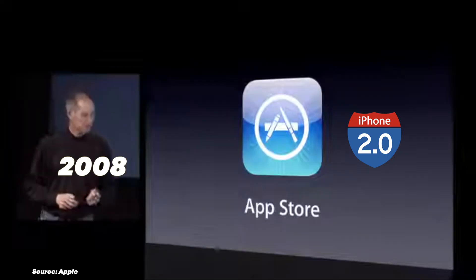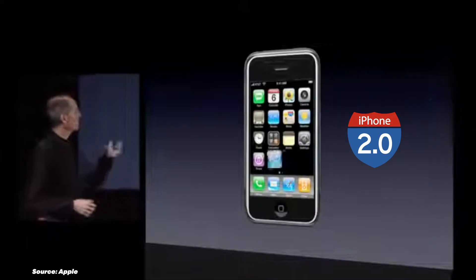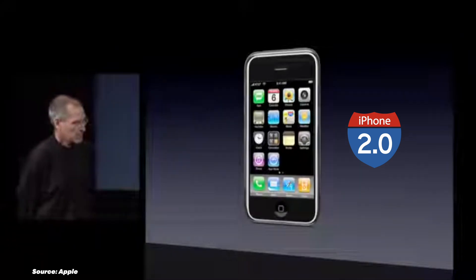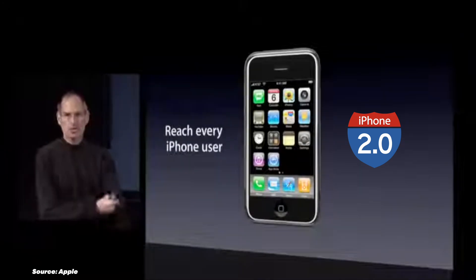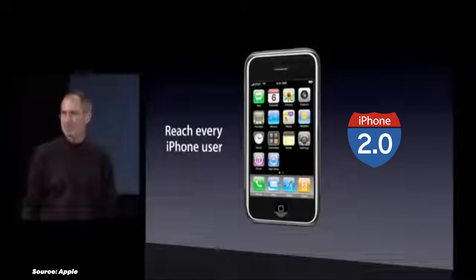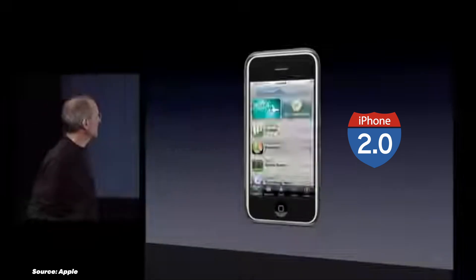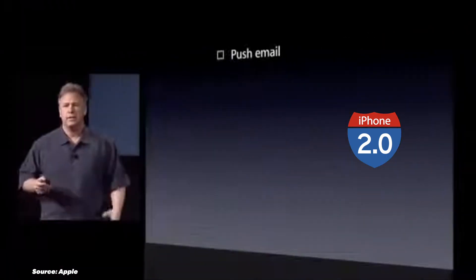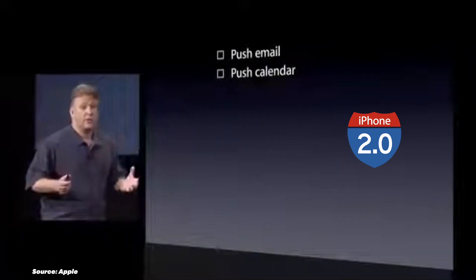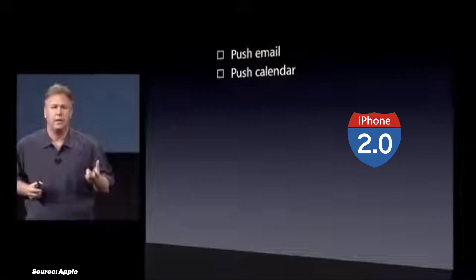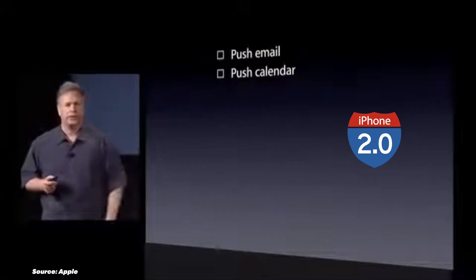In 2008, iPhone OS 2 introduced the App Store, a groundbreaking marketplace that unlocked the potential for third-party applications. This huge update revolutionized the iPhone, transforming it into a versatile and entertaining device. The App Store opened an infinite array of possibilities at your fingertips. Moreover, enhancements to stability and performance further solidified the iPhone's reliability. It also introduced push email, allowing for real-time email notifications. Contact search made finding people in your address book easier. iPhone OS 2 was the moment when iPhone really started to flex its muscles as a platform.